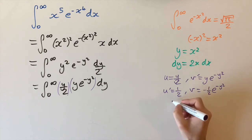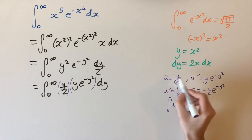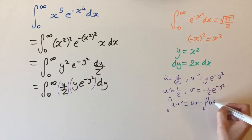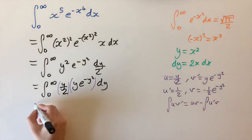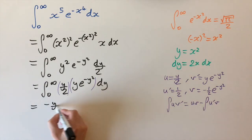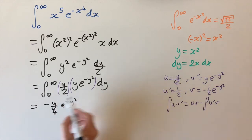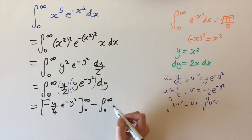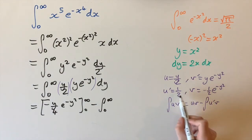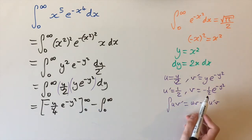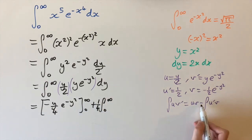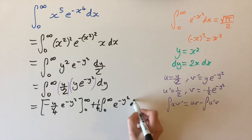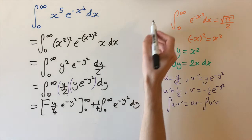Applying the integration by parts formula — integral of u v' equals u v minus integral of u' v — we get the boundary term minus y over 4 times e to the minus y squared evaluated from 0 to infinity, plus one quarter times the integral from 0 to infinity of e to the minus y squared dy. That remaining integral is exactly the Gaussian integral, which we know equals the square root of pi over 2.